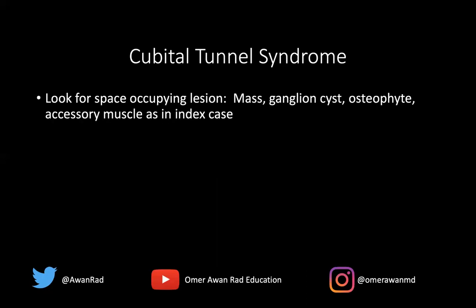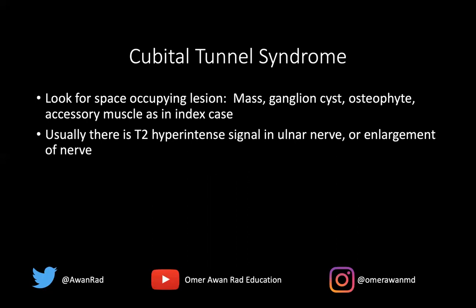The key to this diagnosis is looking for a space-occupying lesion, either a mass, a ganglion cyst, an osteophyte, hematoma from trauma, or an accessory muscle such as the anconeus epitrochlearis that's impinging the nerve, resulting in enlargement or bright signal within the ulnar nerve. On imaging, you're looking for T2 bright or hyperintense signal in the nerve itself, or enlargement of the nerve.